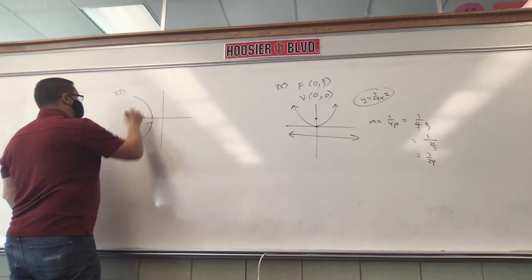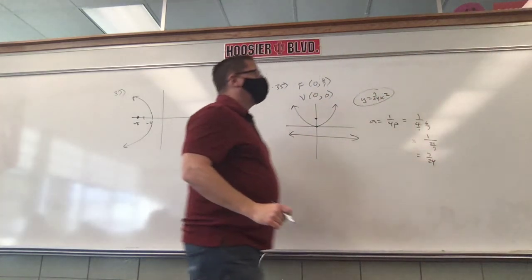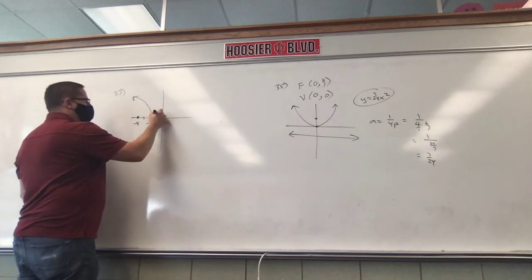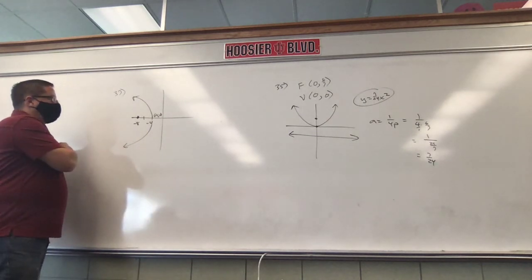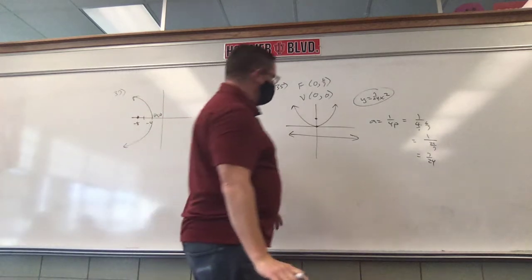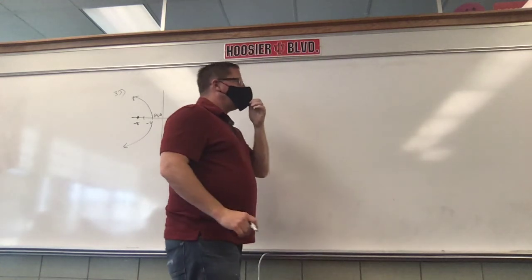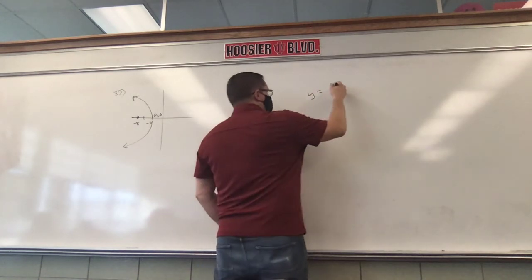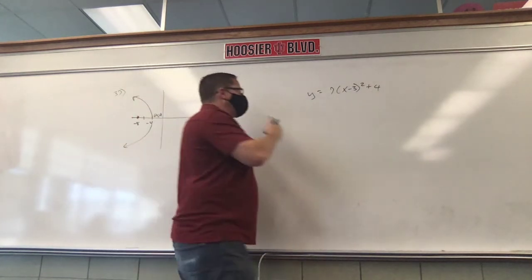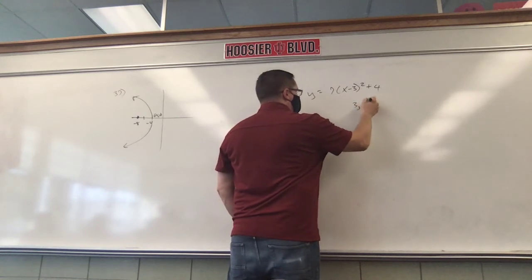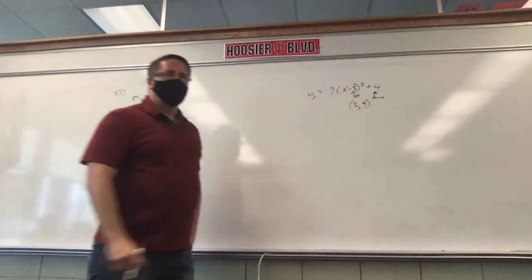Let me do a couple of quick examples first. If I gave you y equals a times (x minus 3) squared plus 4, what's the vertex? Positive 3, 4 — opposite, same. And for x equals a times (y minus 3) squared plus 4, the vertex is also positive 3, 4. Now be careful — when these things are flip-flopped, the numbers move differently.